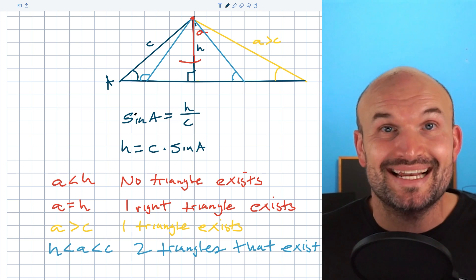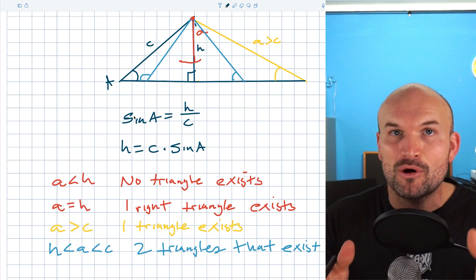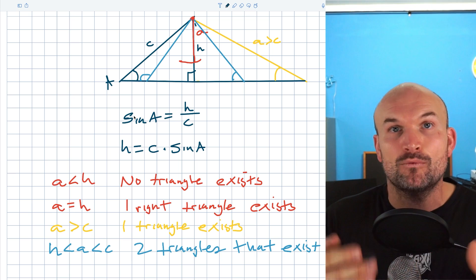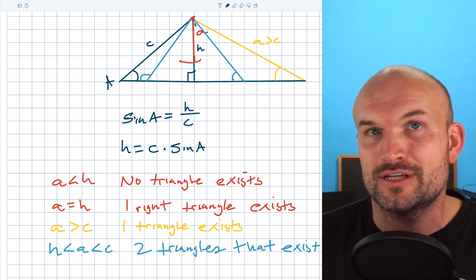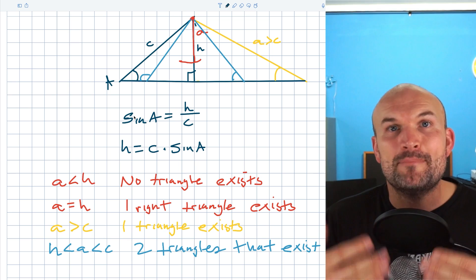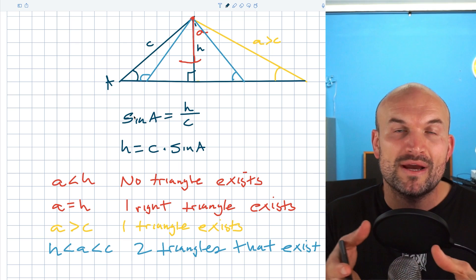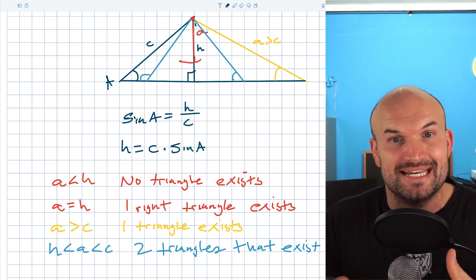So there you go, ladies and gentlemen, that is basically it. Take a picture, stare at it, but more importantly, practice going through this because the more practice that you have with identifying one, two or no triangles, the faster and easier it's going to be. Sometimes you can just look at the triangle. Sometimes you need to just plug in the values, but the more practice you get, the better you're going to get at understanding when one, two or no triangles are going to exist for your ambiguous case.